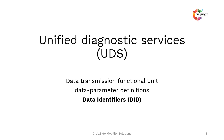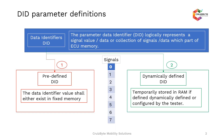In Unified Diagnostic Services, we are going to look at Data Identifiers, or DIDs. These are part of the data transmission functional unit, and under data parameter definitions, DIDs are defined. Data identifiers are unique numbers or unique IDs given to internal signals, internal variables, or some data of the ECU, and that unique number will be mapped to any number of signals available inside the ECU.